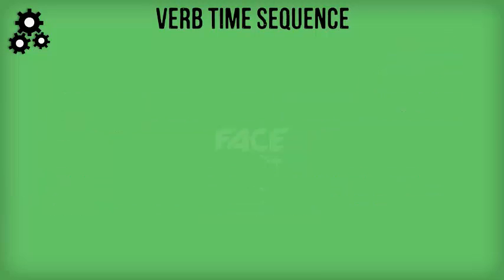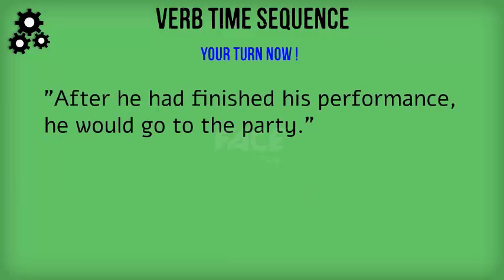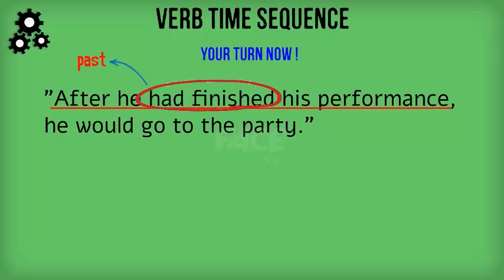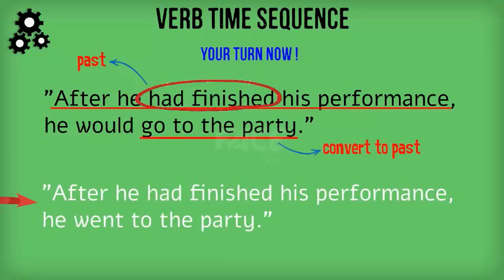Now it's time for you to correct the sentence: 'After he had finished his performance, he would go to the party.' Is the given sentence correct? How can you correct it? Look at the first half of the sentence — 'After he had finished his performance.' What time does this denote? The past. 'Had finished' implies that the action was over long time back. It is understood that after he had finished his performance, he went to the party. So both events should be in the past. The correct sentence is: 'After he had finished his performance, he went to the party.'